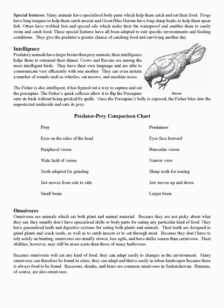Predatory animals have larger brains than prey animals, and their intelligence helps them to outsmart their dinner. Crows and ravens are among the most intelligent birds — they have their own language, communicate very efficiently, and can even imitate sounds such as whistles, cat meows, and machine noise. The fisher is also intelligent: it has figured out a way to capture and eat the porcupine. The fisher's quick reflexes allow it to flip the porcupine onto its back without being pricked by quills. Once the porcupine's belly is exposed, the fisher bites into the unprotected underside and eats its prey.